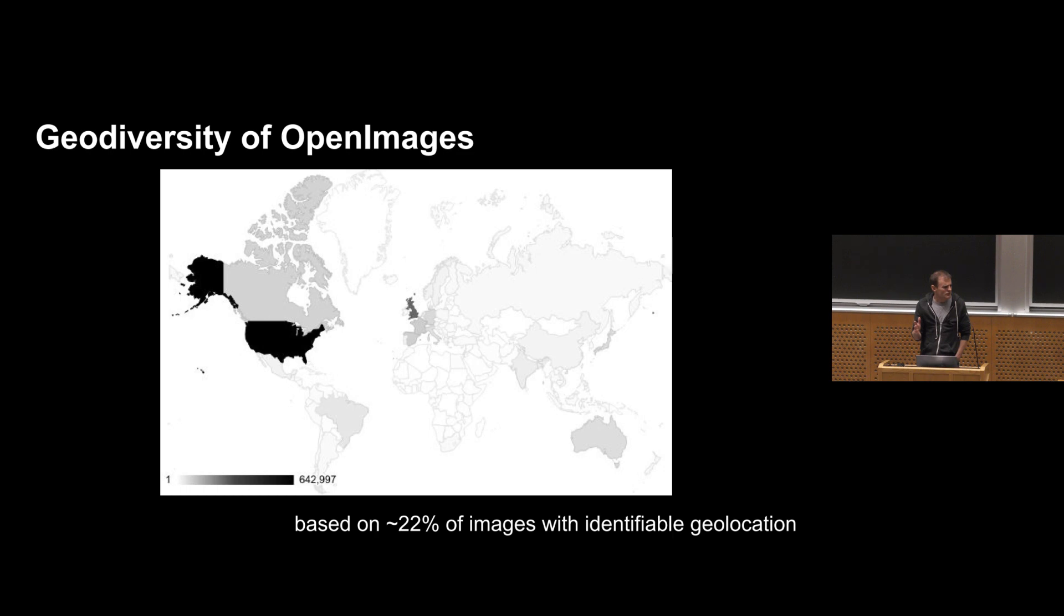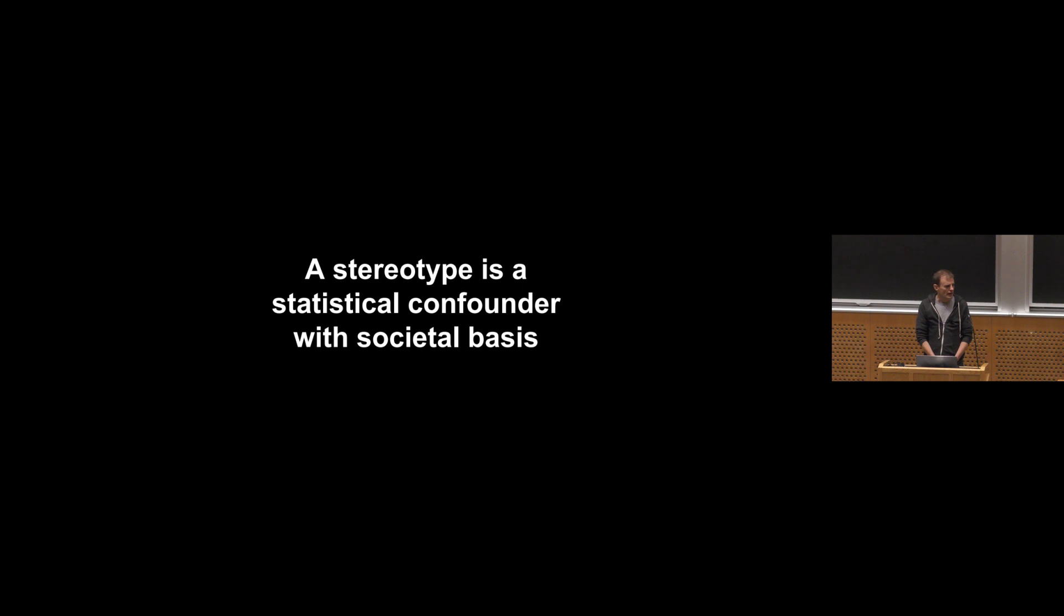So none of this is like something you wouldn't figure out if you sat down for five minutes. This is all super basic statistics. It is, in fact, stuff that the statistics people have been sort of railing at the machine learning community for the last several decades. But as machine learning models become more ubiquitous in everyday life, I think that paying attention to these kinds of issues becomes ever more important. So let's go back to what is a stereotype, and I think I agree with Constantine's idea, and I'm going to add one more tweak to it. I'm going to say that a stereotype is a statistical confounder, using Constantine's language almost exactly, that has a societal basis.